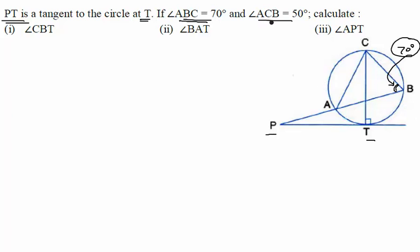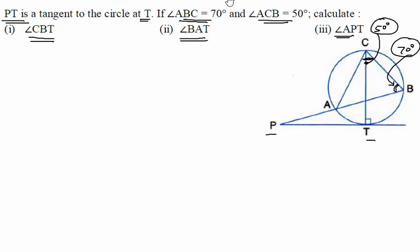Angle ACB is 50 degrees. This is the complete angle ACB and it is given to us as 50 degrees. So now we have to calculate these three angles: angle BCT, angle BAT, and angle APT. Let us one by one mark these angles and try to find the values.